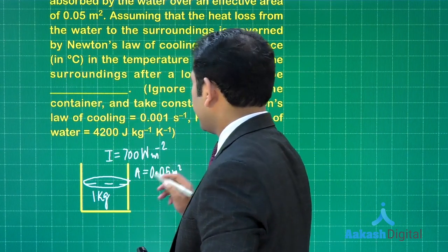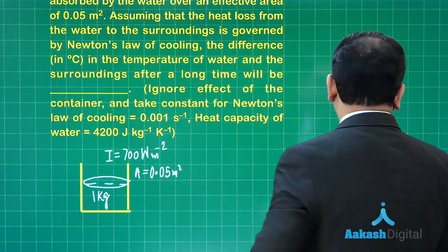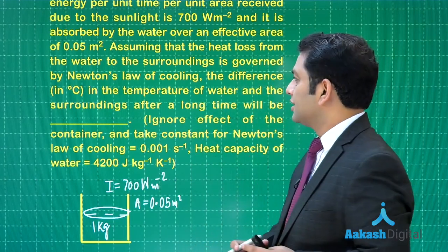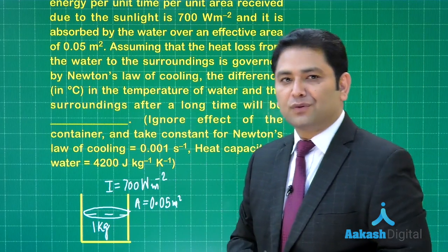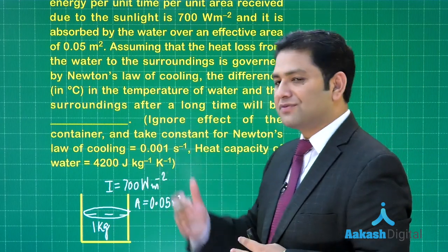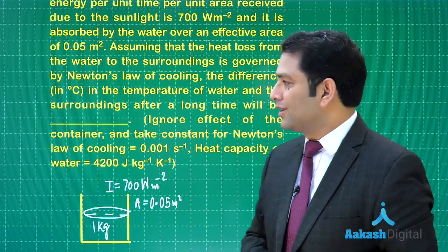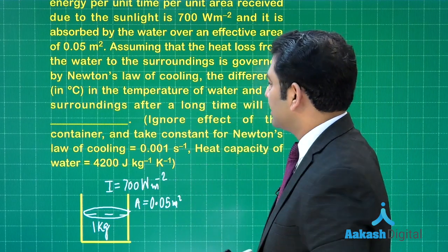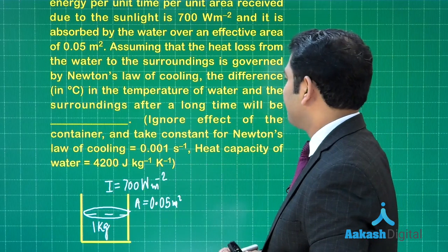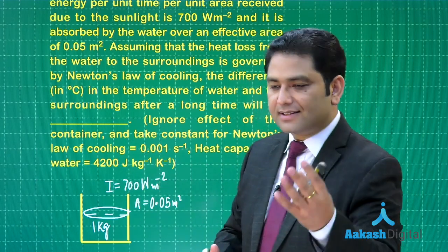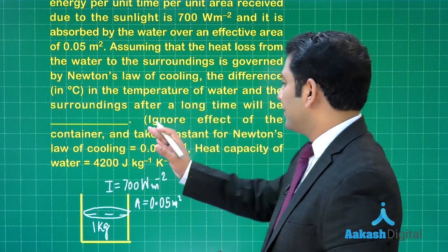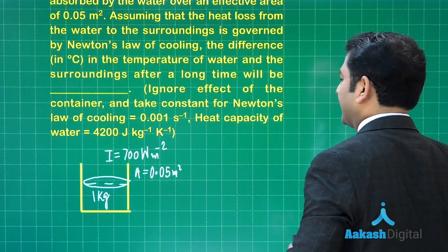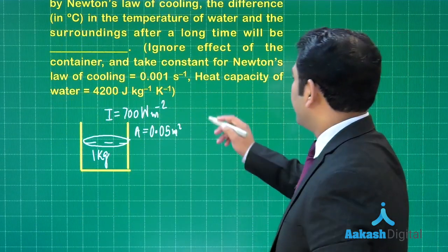Assuming that the heat loss from the water to the surrounding is governed by Newton's law of cooling. So that is a nice discount given because if it was for Stefan's law, we had to go with fourth power of temperature. You need to calculate the difference in temperature of water and the surroundings after a long time. We need to ignore the effects of container, and constant for Newton's cooling, look at the unit, 0.001 per second.